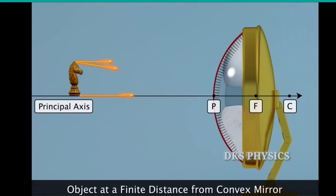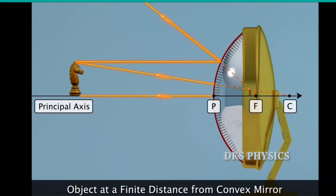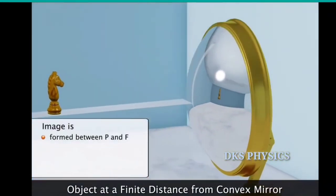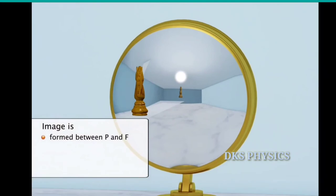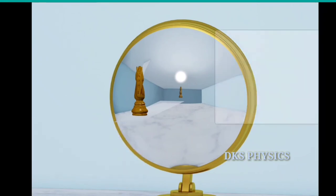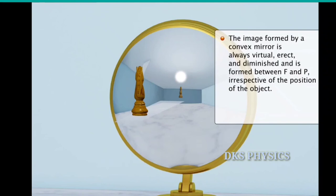When the object is at the center of the mirror, the image is formed behind the mirror — between P and F — and is virtual, erect, and diminished. Thus, the image formed by a convex mirror is always virtual, erect, and diminished, and is formed between F and P, irrespective of the position of the object. A convex mirror always diverges light.